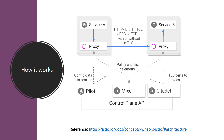Pilot provides service discovery for Envoy sidecars and traffic management capabilities. Citadel provides strong service-to-service and end-user authentication. This is a high-level overview of the Istio architecture.